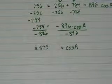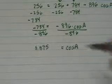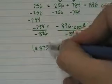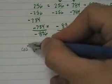But I don't want cosine of a, I want a. How do I find a? Take the inverse cosine of both sides.